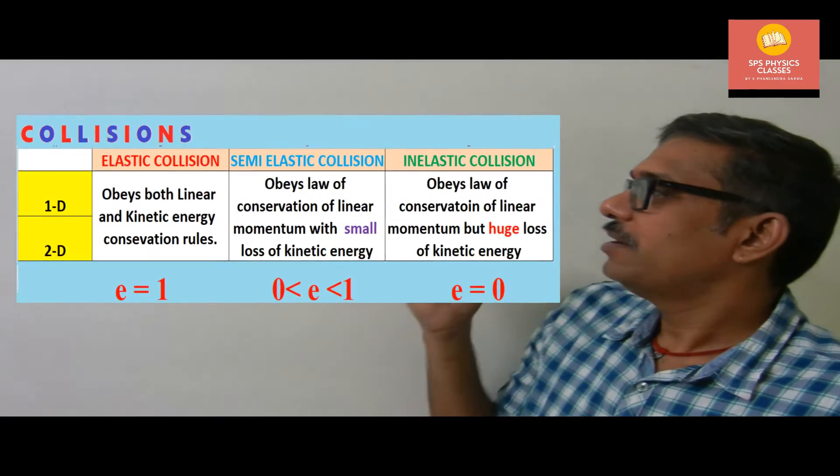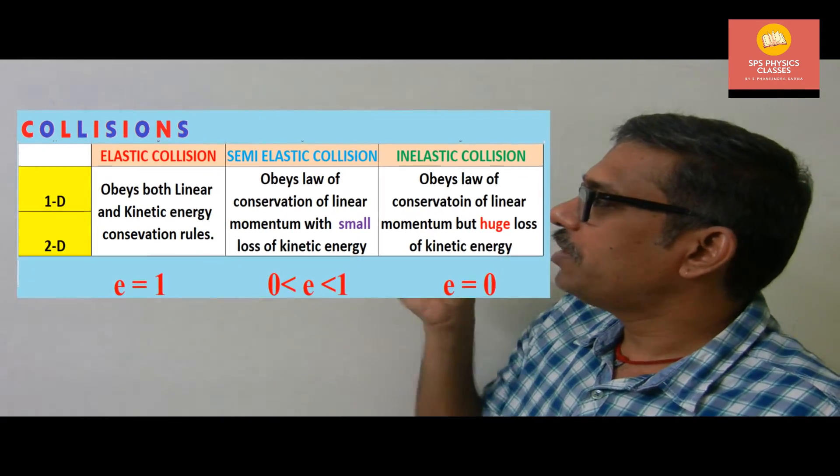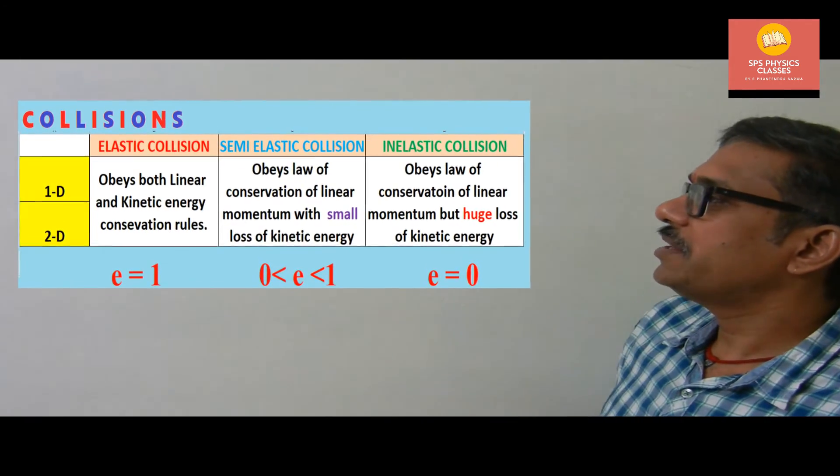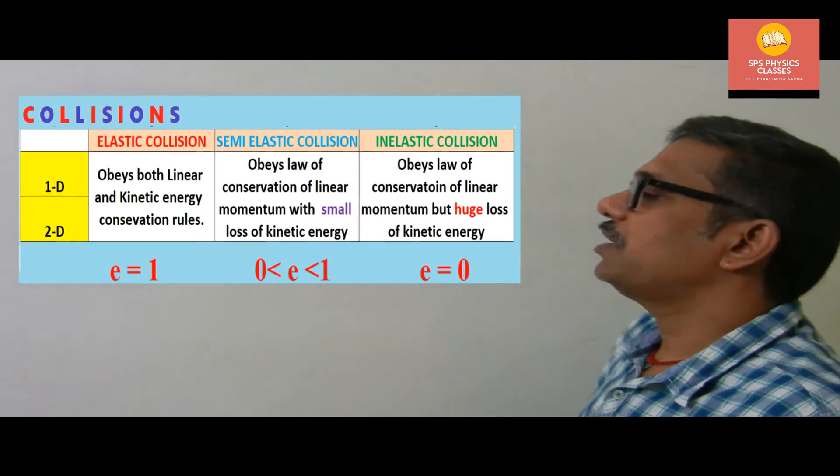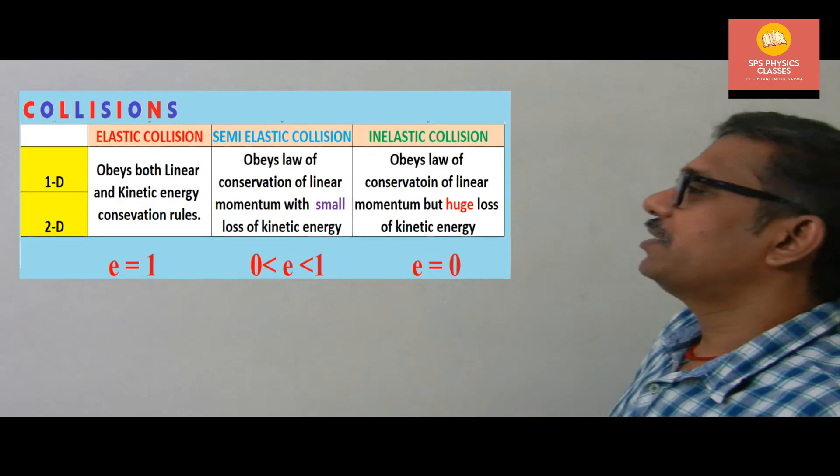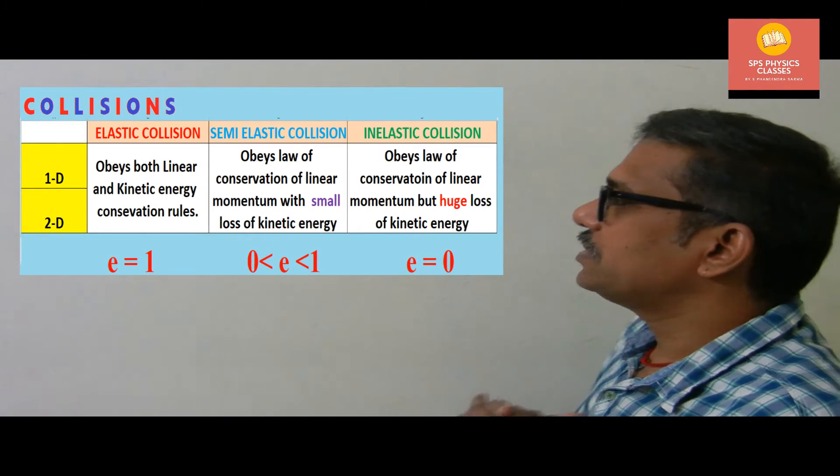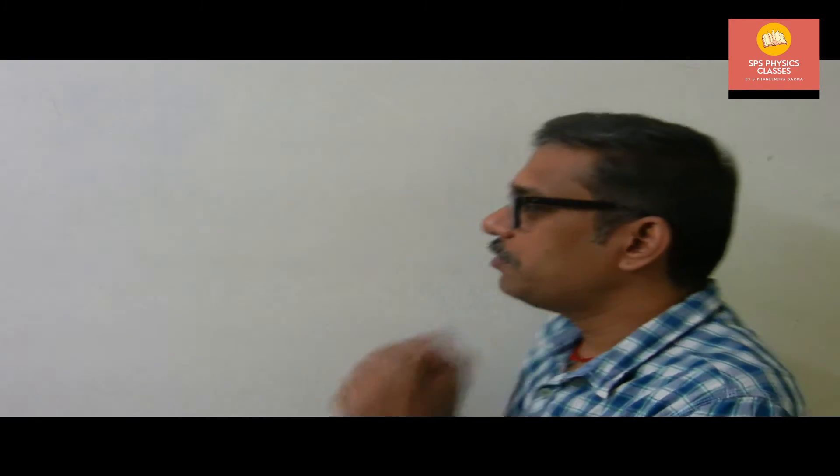Generally when you consider the concept of collisions, we have something like a tabular form. In the tabular form one can see clearly that there are just two type collisions: one dimension and two dimension. Over that, elastic, semi-elastic, and inelastic collisions are there, and we'll try to see about these collisions in short.